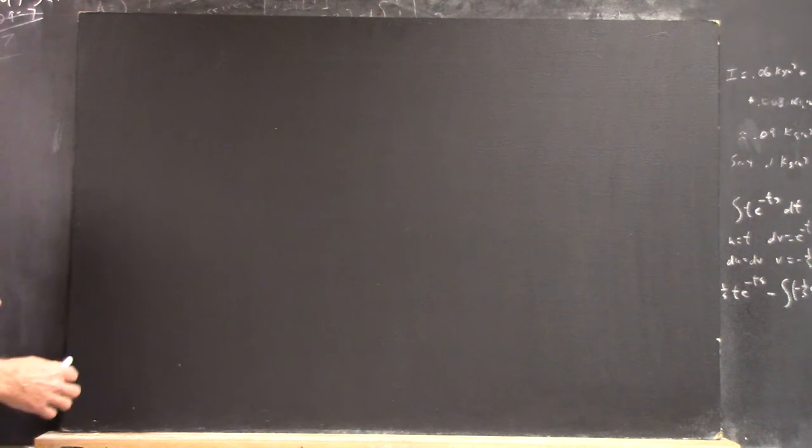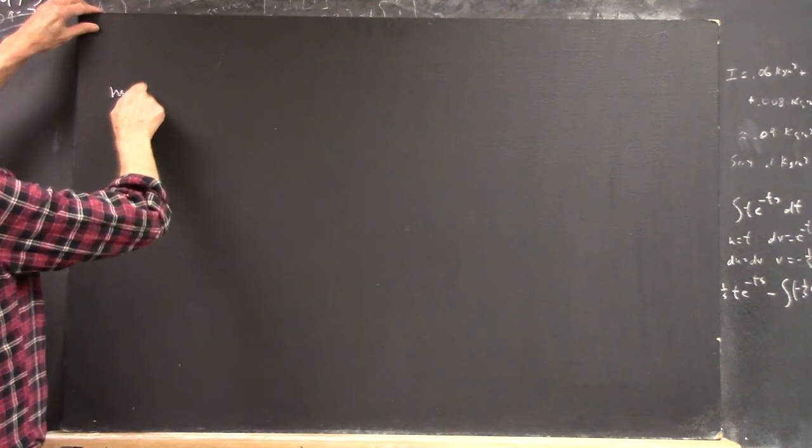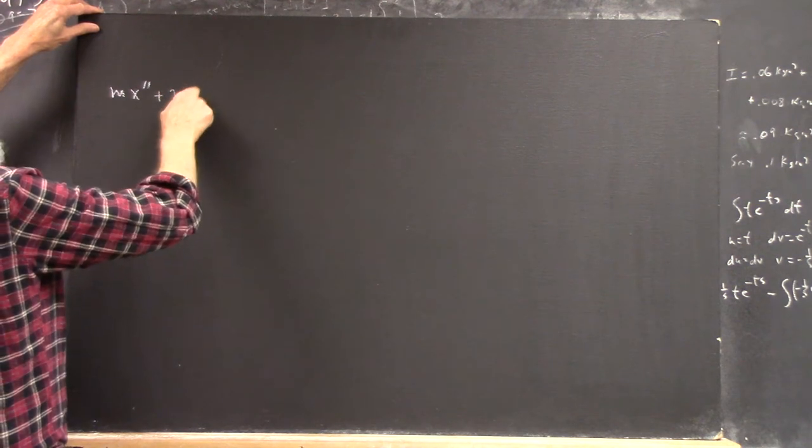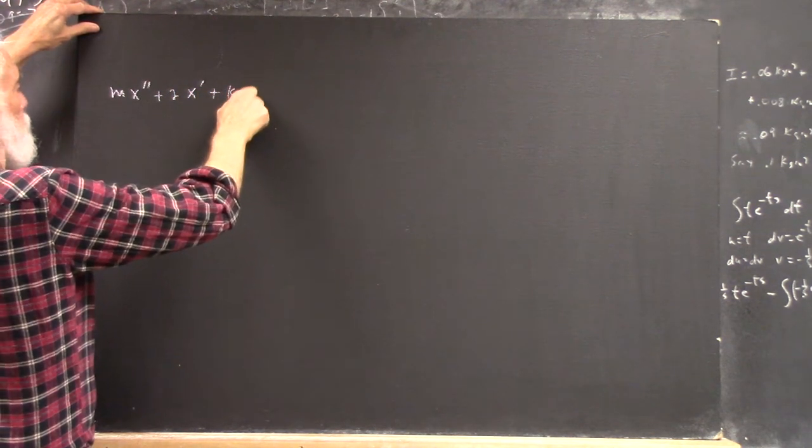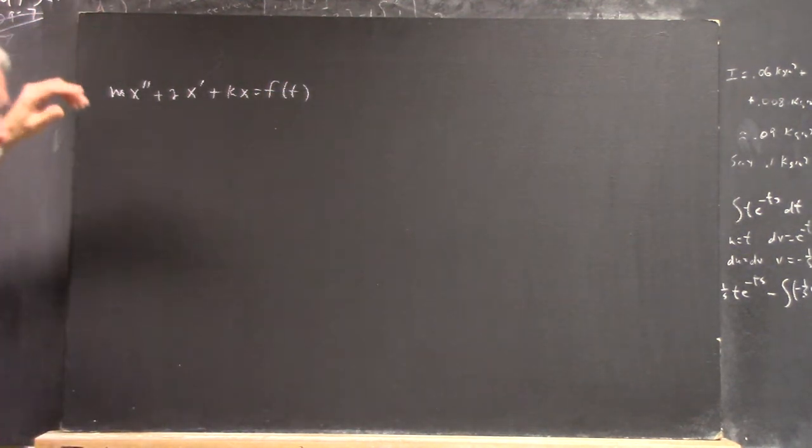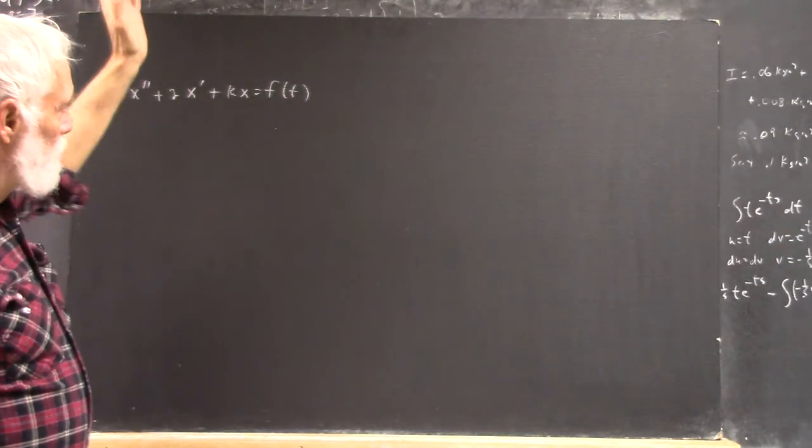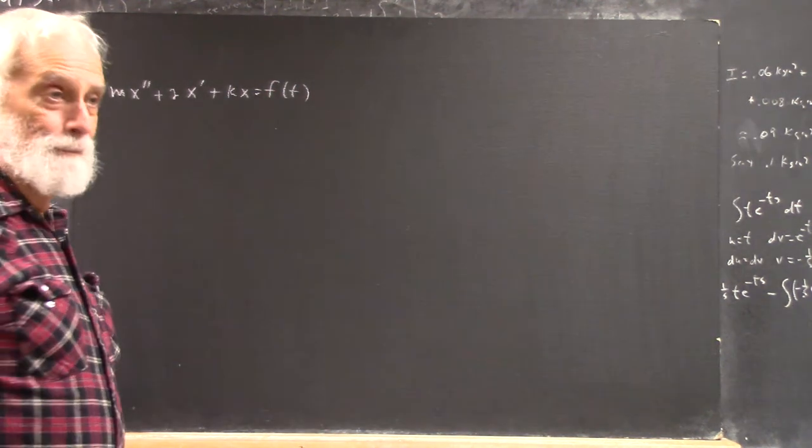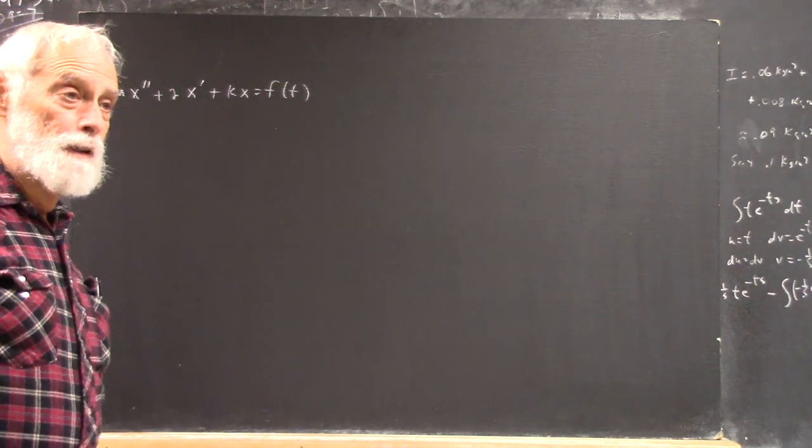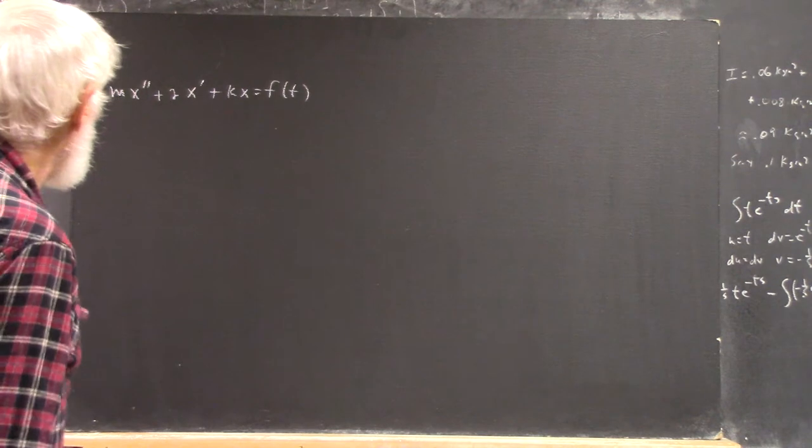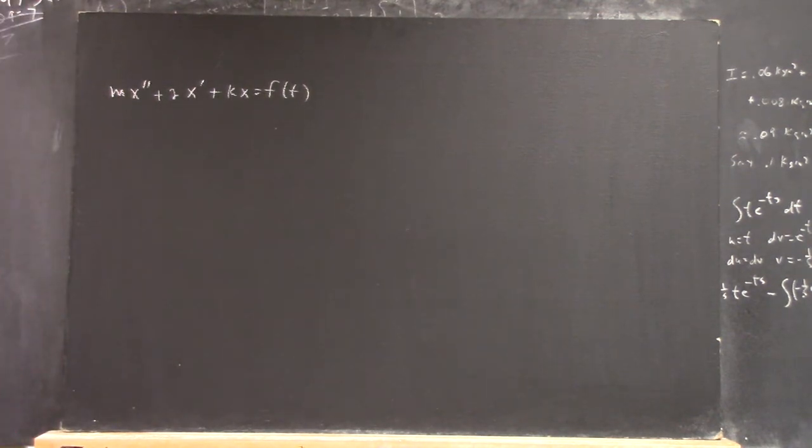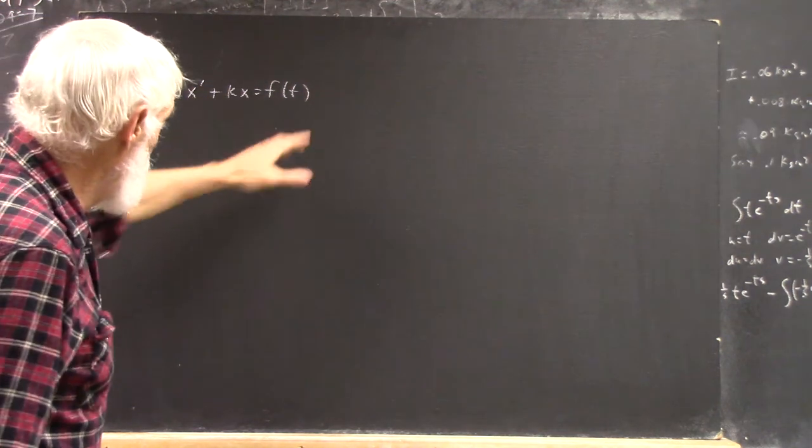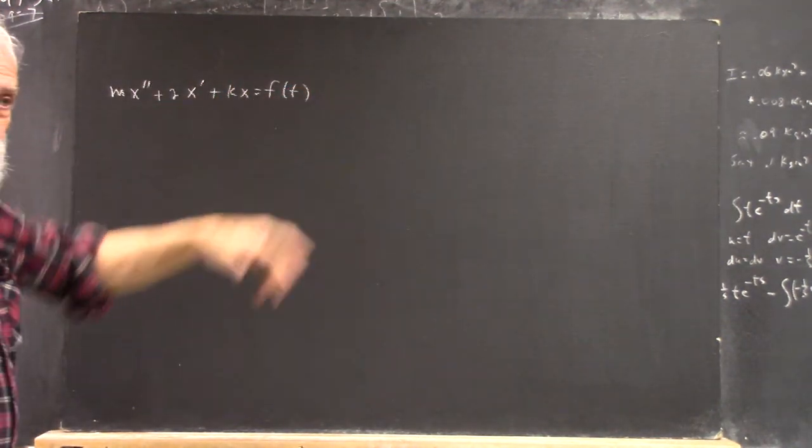Okay, now we want to look at differential equation mx double prime plus gamma x prime plus kx equals f of t. As we've seen, this f of t could be something that we can't treat with just regular calculus. So we often have to transform a system of this nature. We're going to look at something a little different than just how you solve the equation. So I want to Laplace transform this equation.